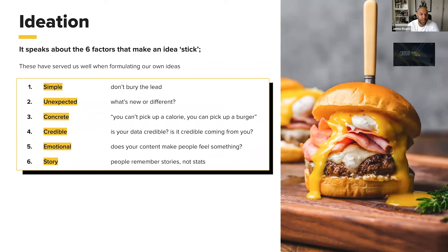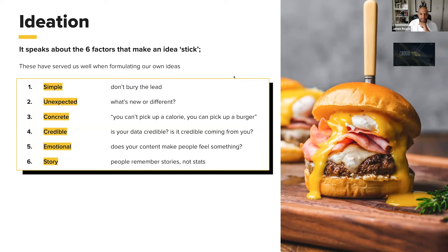The first factor is make sure your idea is simple — don't bury the lead, keep the key story front and center. Number two is make it unexpected — what is new or different about what you're presenting? Number three is make it concrete — a good example from the book: you can't pick up a calorie but you can pick up a burger, so it's about language and making the story relatable. Number four is credible — is the data coming from a credible source, like government data? Number five is emotional — does your content make people feel something? And number six is story — people remember stories, not stats, so even though a lot of our content is built from statistics, those statistics need to tell a story.